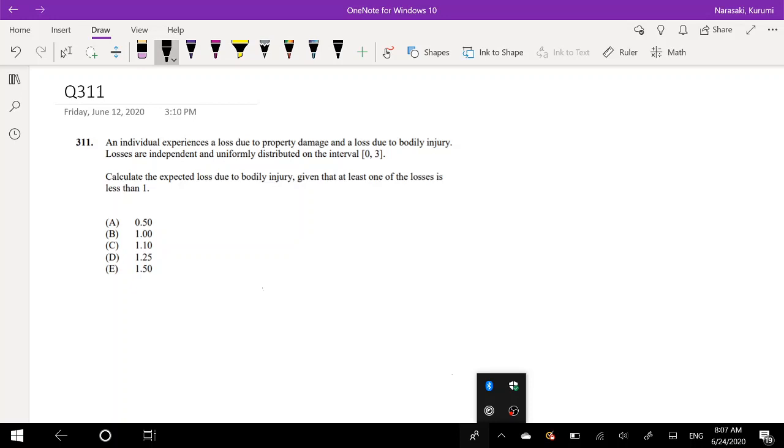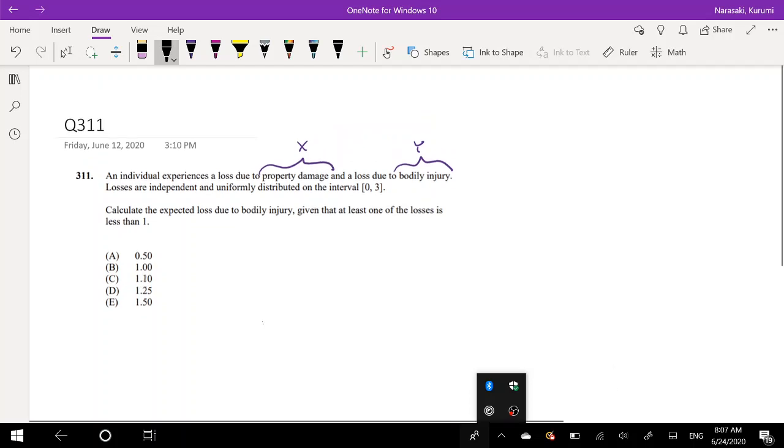An individual experiences a loss due to property damages and loss due to bodily injuries. I'm just gonna first assign these variables. I'm going to say property damages is x and bodily injury is y.